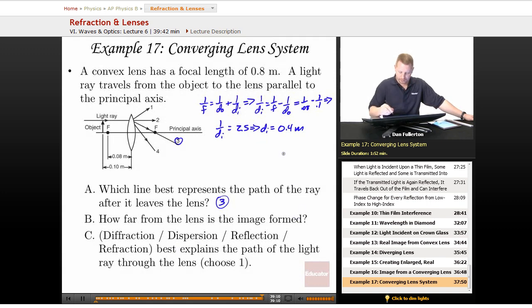Which one of these best explains the path of the light through the lens? Diffraction, dispersion, reflection, or refraction?